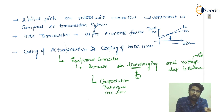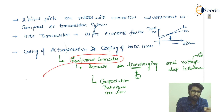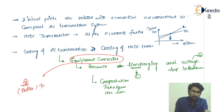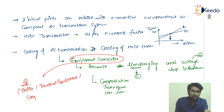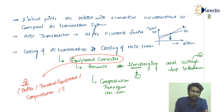To reduce line charging, voltage drop, and reactances, compensation techniques are used. The equipments connected for this purpose include the phase shifter, terminal equipments, compensation techniques — which may be series compensation or shunt compensation — and also static VAR. You have to remember these points.